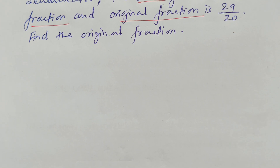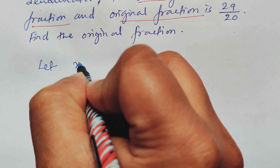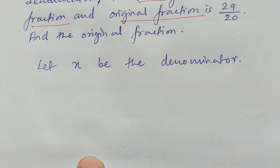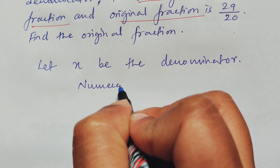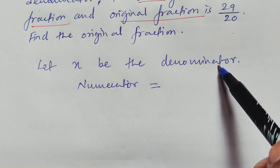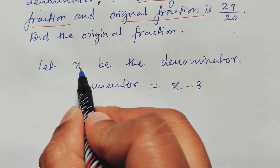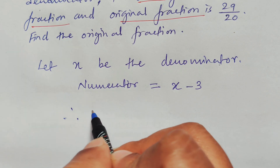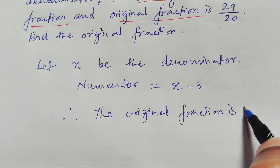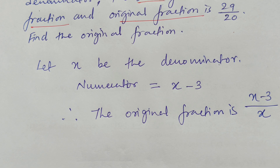I will consider the denominator as x, because the denominator is greater here. Let x be the denominator. Since the numerator is 3 less than the denominator, the numerator will be x minus 3. Therefore, the original fraction is (x − 3) divided by x.